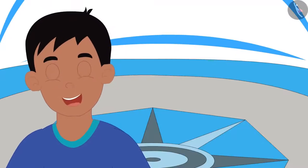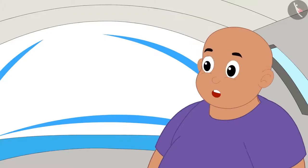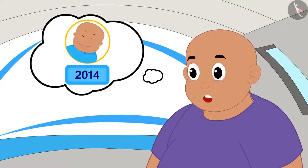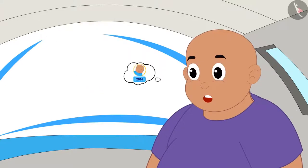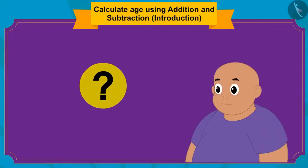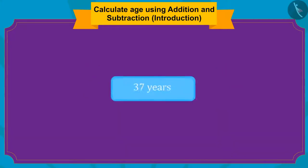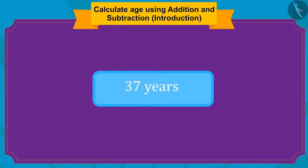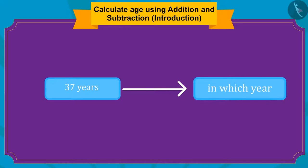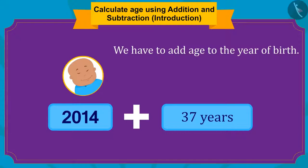Raju became very excited knowing that he is now 37 years old. Now, Bablu is thinking that he was born in 2014. So, in which year will he be 37 years old? Children, do you know how we can find the answer? Whenever we are given the age of a person and want to find out in which future year he will be of that age, we only have to add that age to the year of his birth.